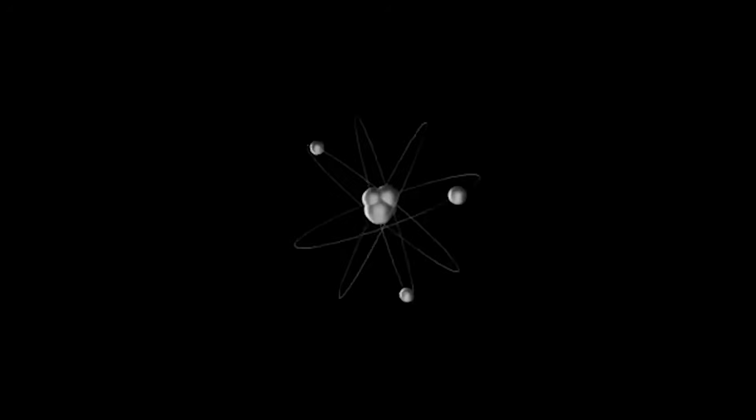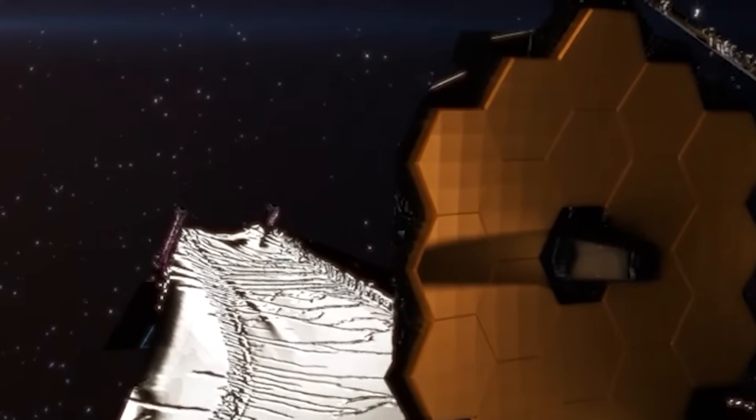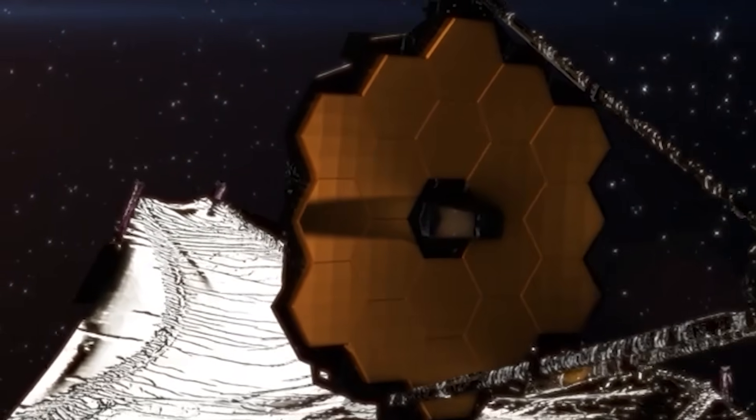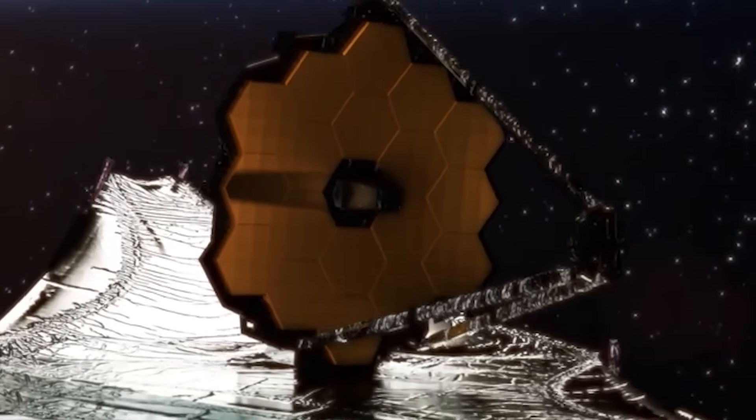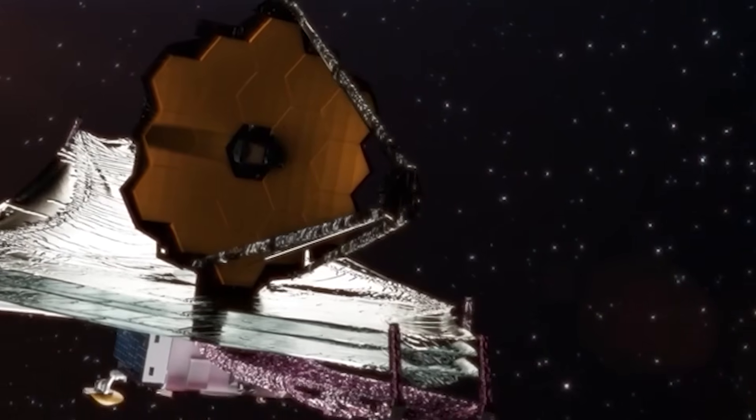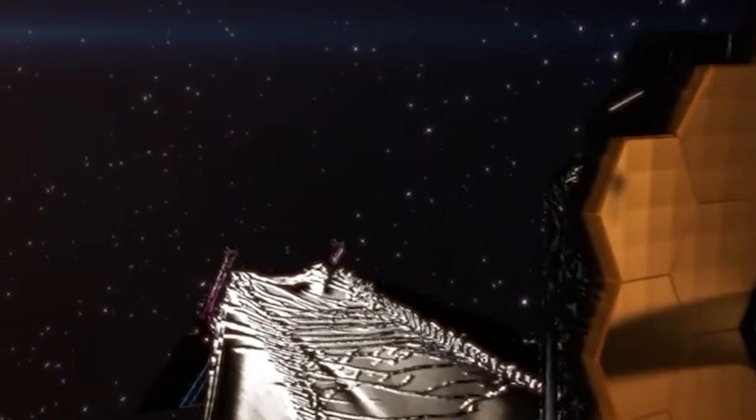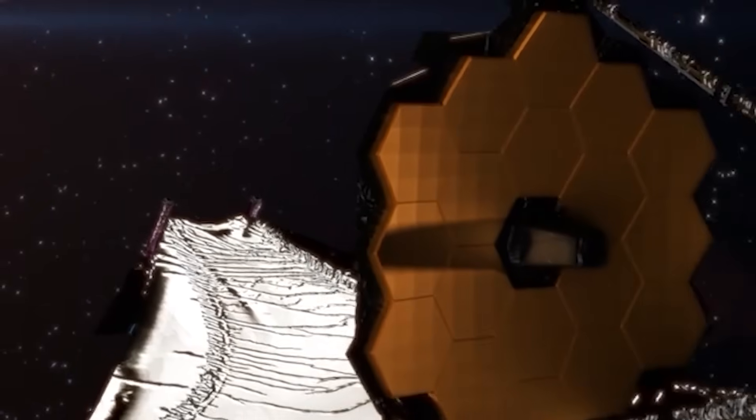Think about this. Every atom in your body, every carbon atom in your cells, every oxygen atom you breathe, every iron atom in your blood, was forged in the core of ancient stars. Long before Earth existed, long before our sun was born, stars lived and died, scattering their ashes across the universe. Those ashes became the raw material for planets, oceans, and eventually, life itself. In other words, we are literally stardust made conscious.